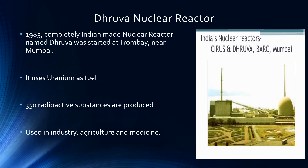Let us move on to the next important institution: the Dhruva nuclear reactor. In 1985, a completely Indian-made nuclear reactor called the Dhruva was started at Trombay, near Mumbai. The Dhruva nuclear reactor uses uranium as fuel, and at this center around 350 radioactive substances are produced, which are used in industry, agriculture, and medicine.